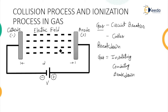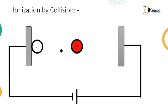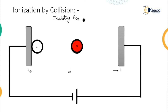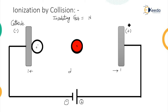Consider the first ionization by collision. To understand ionization by collision, consider the same electrodes separated by a certain distance d. This gap is filled with insulating gas. This insulating gas consists of neutral molecules, represented with N in red. The electrode connected to the negative supply attains negative polarity, hence called the cathode, and the positive supply electrode attains positive polarity, represented as the anode.